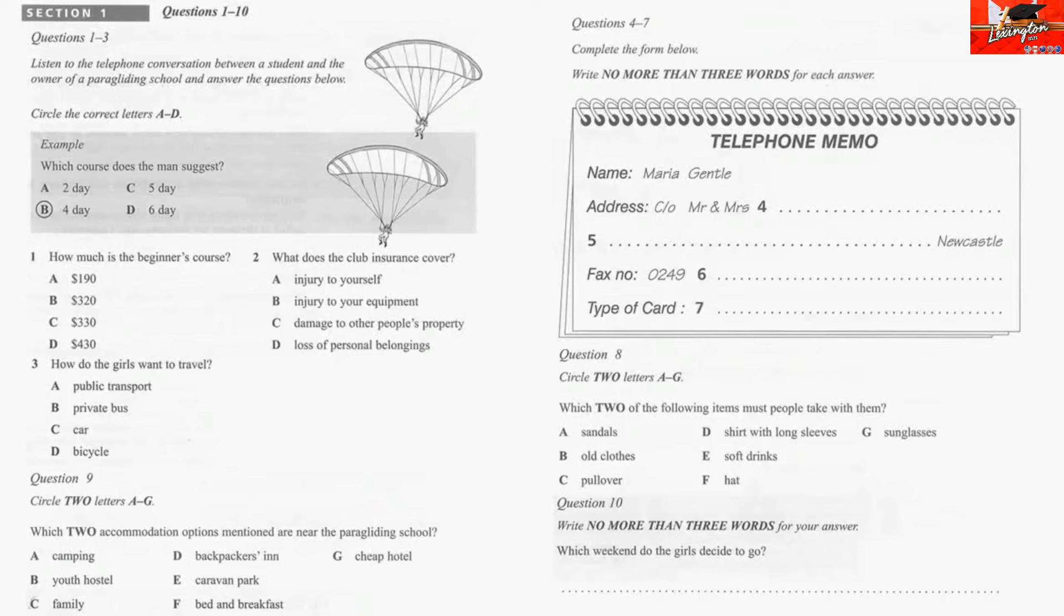Right. And you also have to become a member of our club so that you're insured. That'll cost you $12 a day. Everyone has to take out insurance, you see. Does that cover me if I break a leg? No, I'm afraid not. It's only third party and covers you against damage to other people or their belongings, but not theft or injury. You would need to take out your own personal accident insurance.